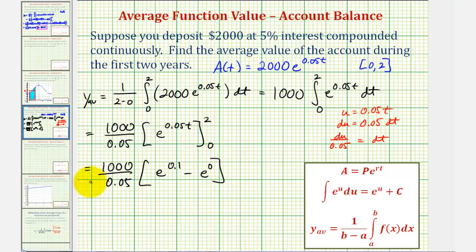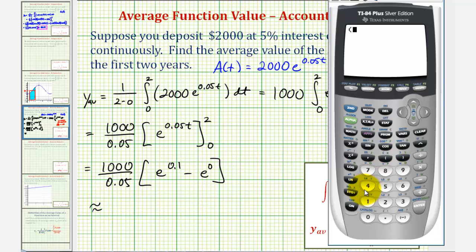And now we'll go to the calculator and round this to the nearest cent. So we'd have 1,000 divided by 0.05 times the quantity e to the power of 0.1 minus e to the 0, which is just 1. Giving us an average account balance over the first two years of $2,103 and approximately 42 cents.